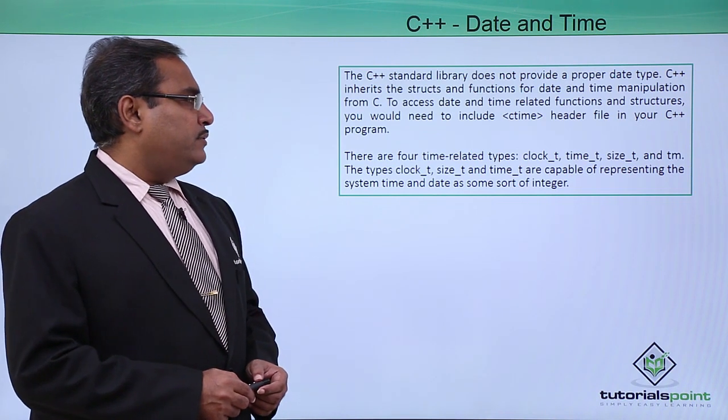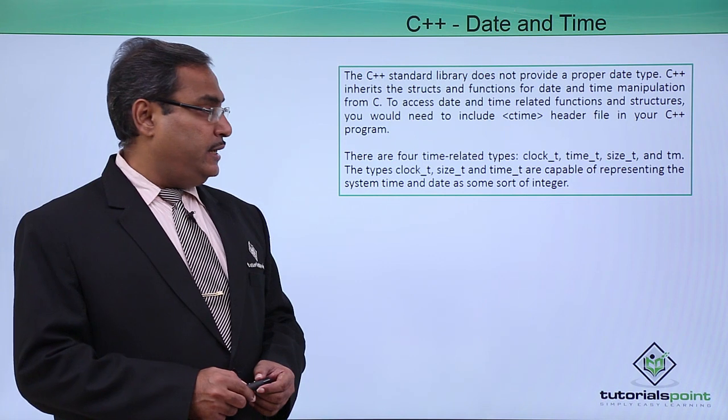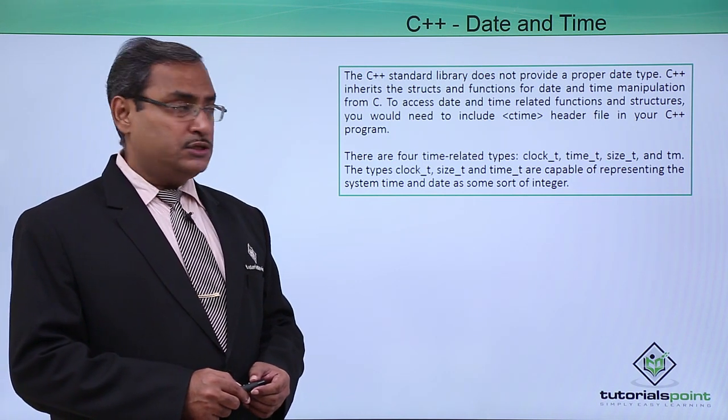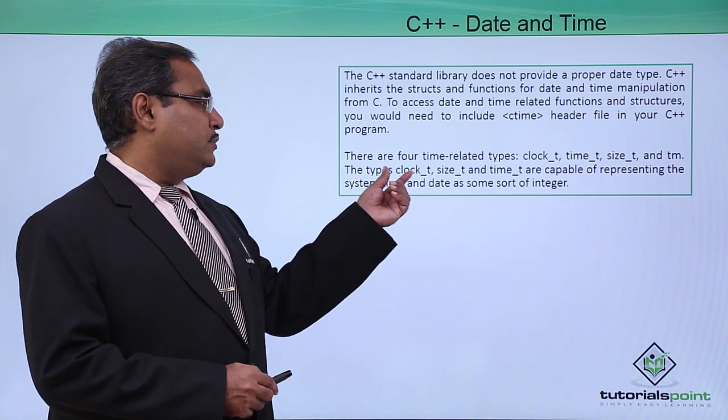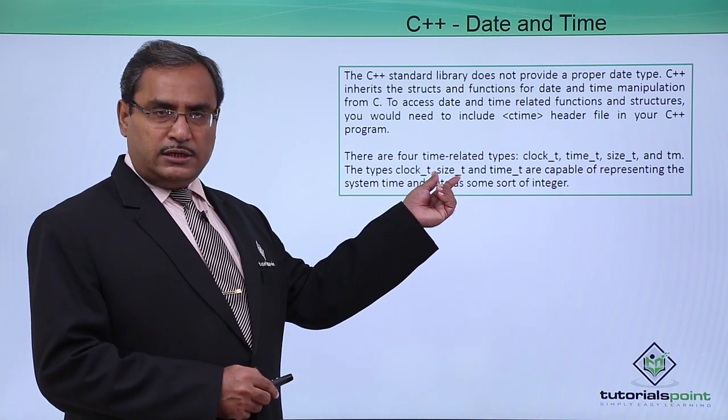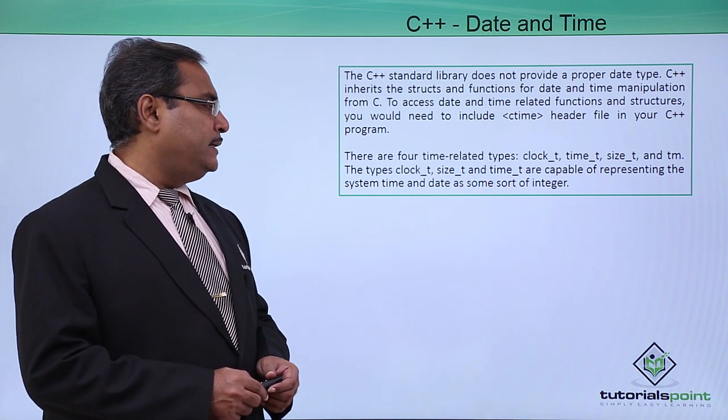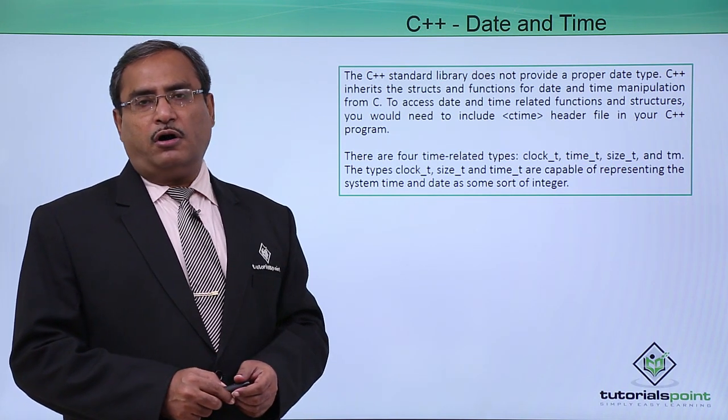There are four time-related types. Here, one is clock_t, time_t, size_t and tm. The types clock_t, size_t and time_t are capable of representing the system time and date as some sort of integer.